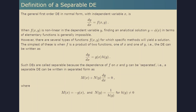We divide by h of y, giving 1 over h of y times dy/dx equals g of x, or equivalently m of x plus n of y times dy/dx equals 0, where m and n are defined in the obvious fashion. Note that this is only possible for values of y where h of y is non-zero, so there is always a possibility of missing a solution. We'll see that you have to be careful about that.